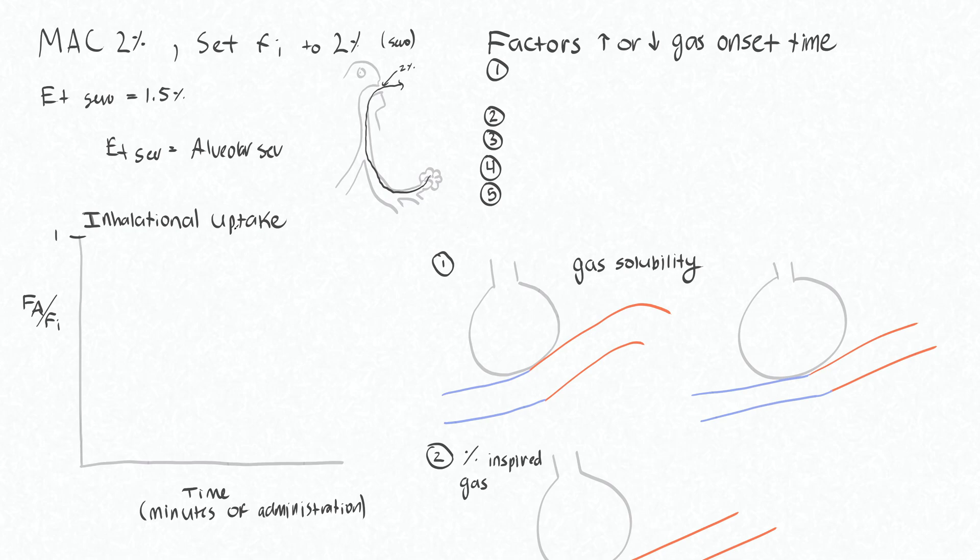On the y-axis we have our fraction of alveolar gas—this is what you breathe out compared to what you have breathed in, your fraction of inspired—and then time on the x-axis, so how long you've been breathing the gas in.